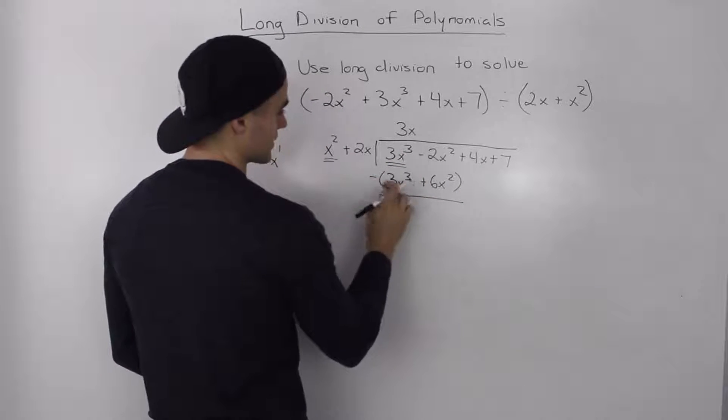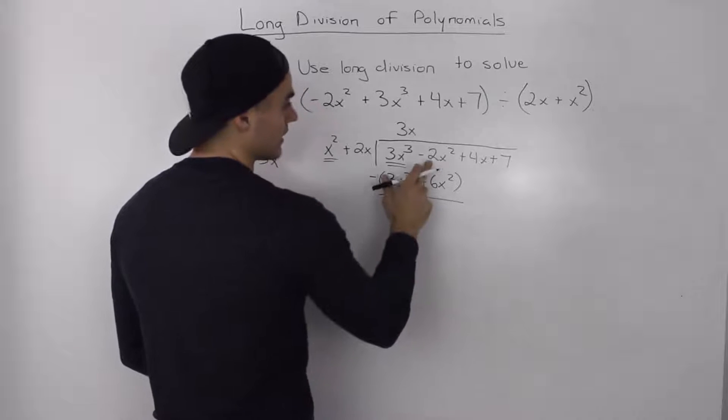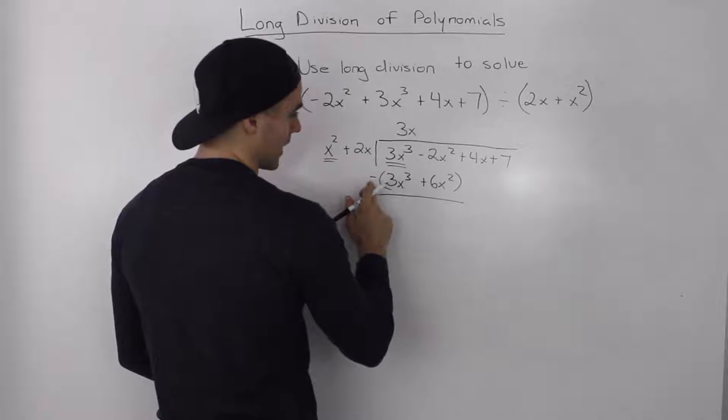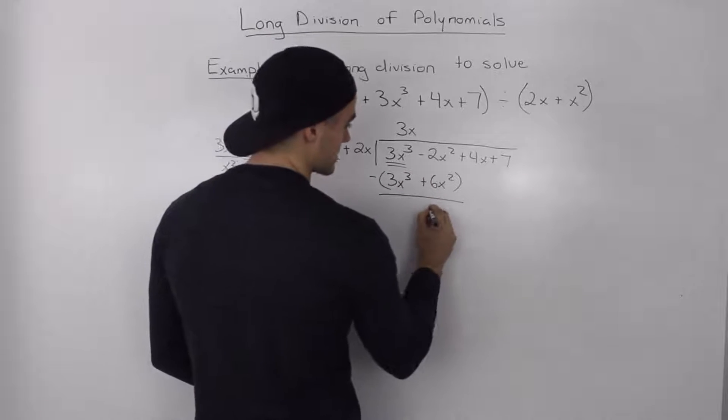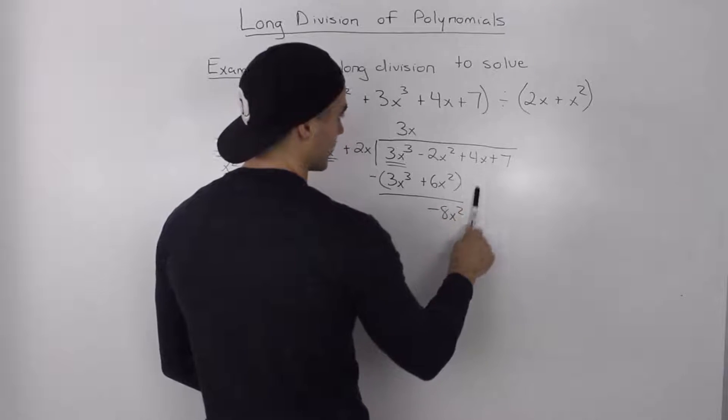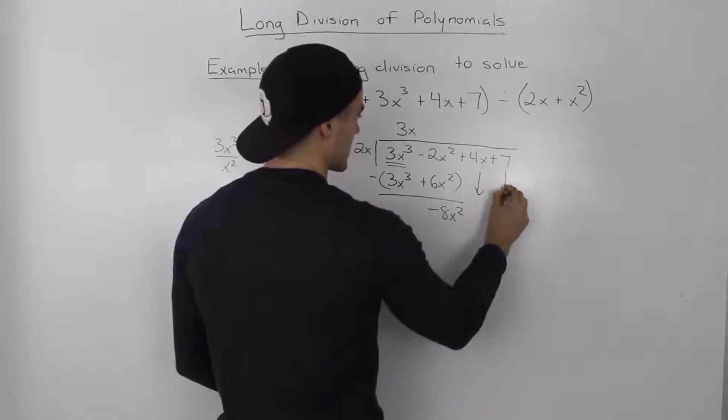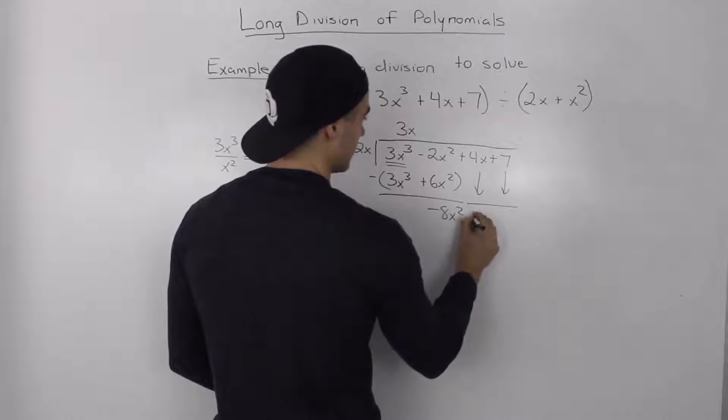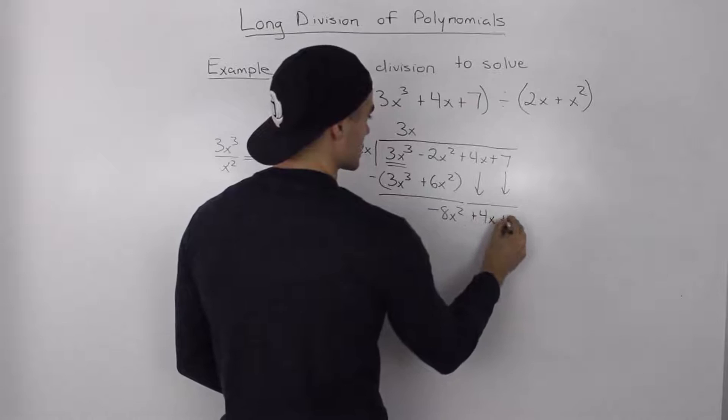So 3x cubed minus 3x cubed is just 0. Negative 2x squared minus positive 6x squared, that ends up giving us negative 8x squared. And then bring down the 4x and the 7, so that ends up being plus 4x plus 7.